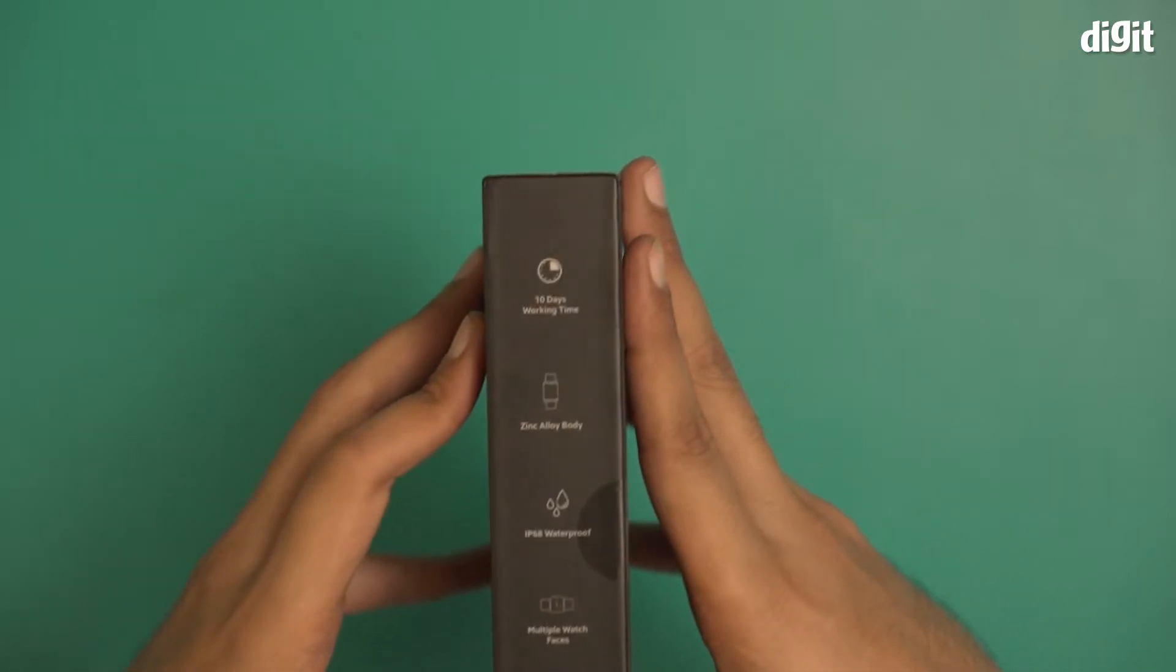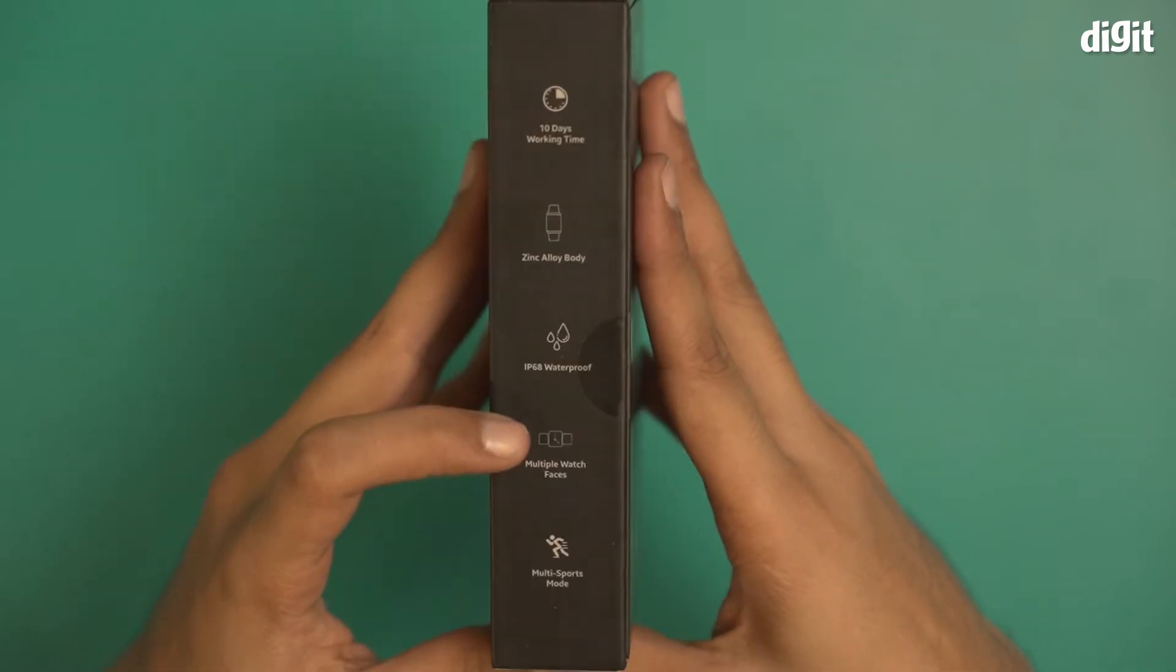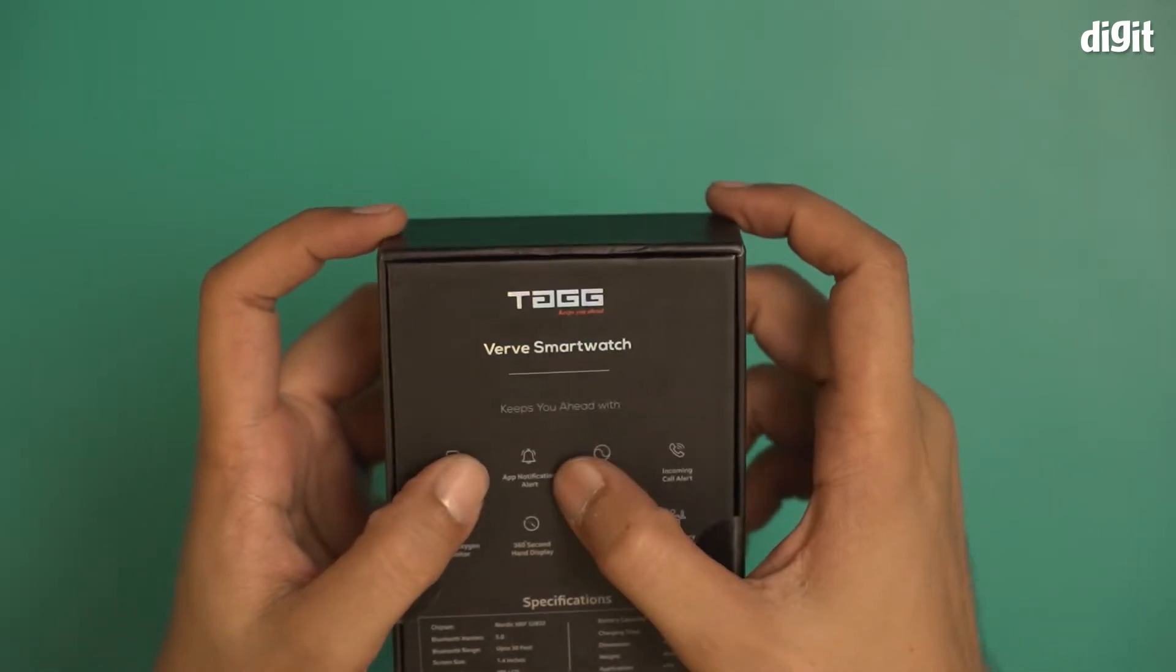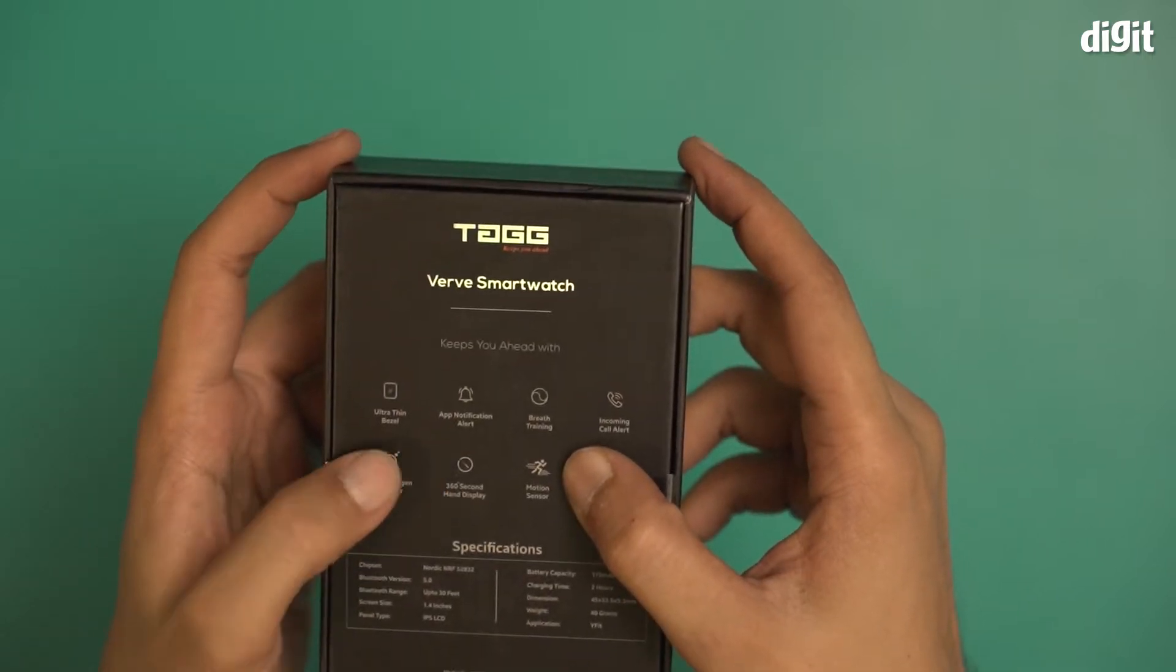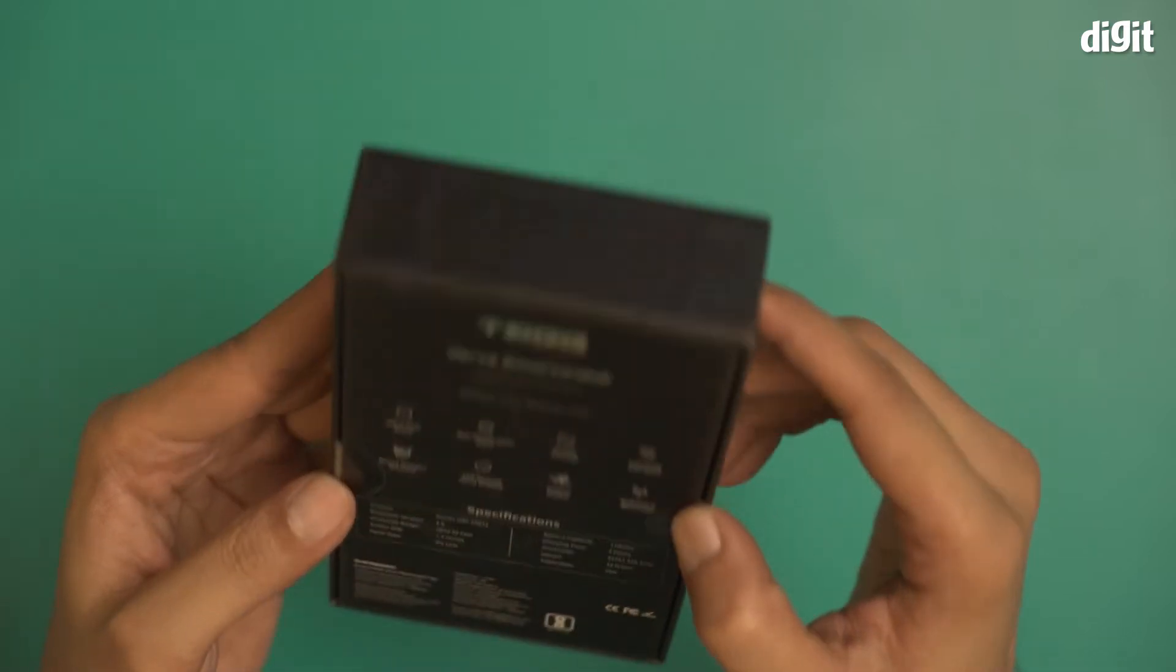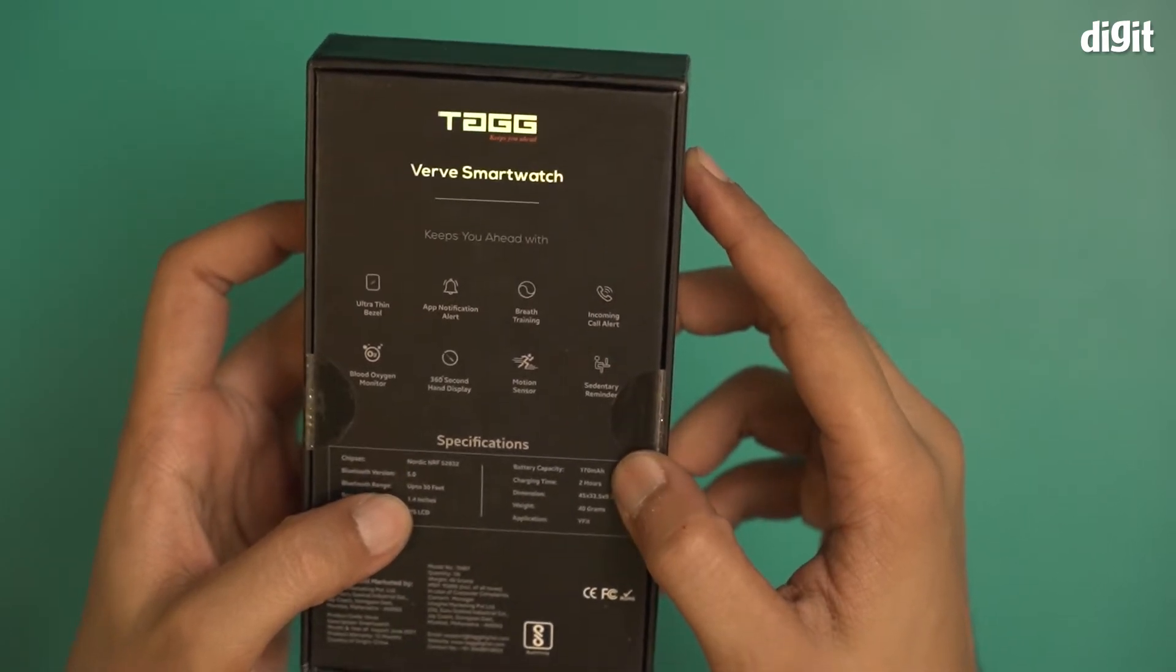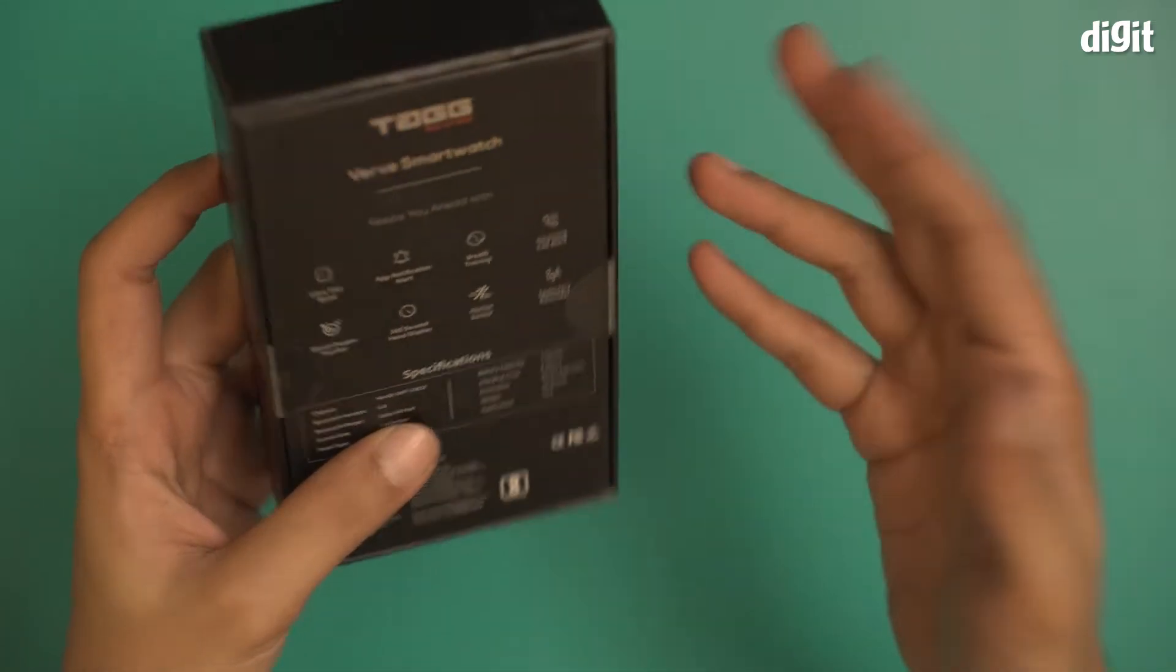The box says 10 days of working time, zinc alloy body, IP68 waterproof, and multiple watch faces along with multiple sport modes. Over here it says ultra thin bezel, app notification alert, heart rate training, motion sensor, 360 degree second hand display, blood oxygen monitor, and sedentary reminder. The screen size is 1.4 inch IPS LCD screen, the battery capacity is 170 mAh, and charging time is about two hours. That's all the information on the box.